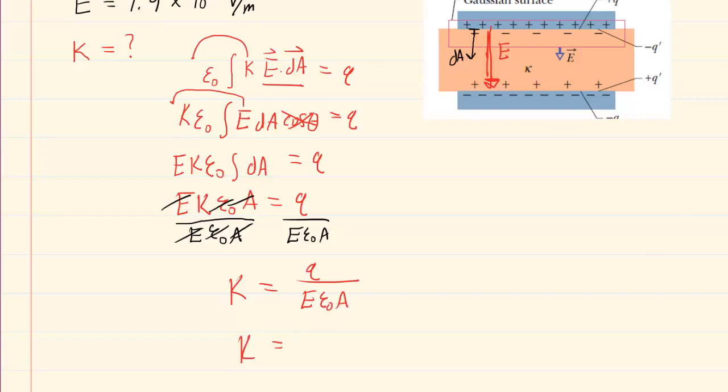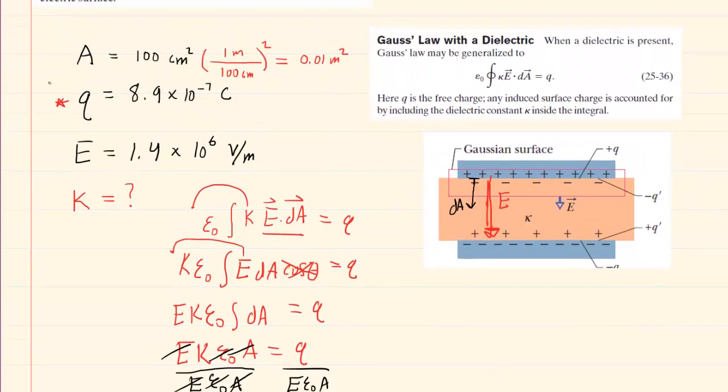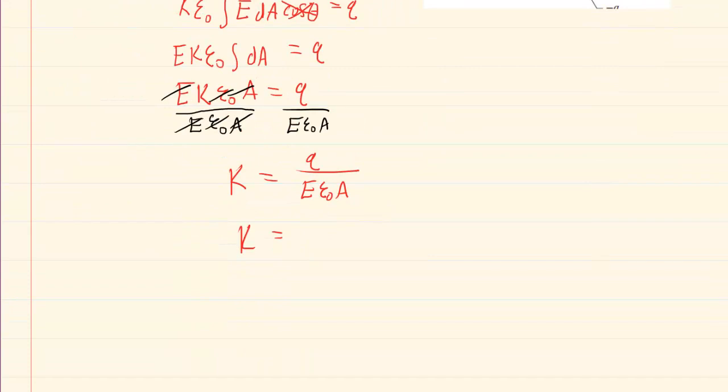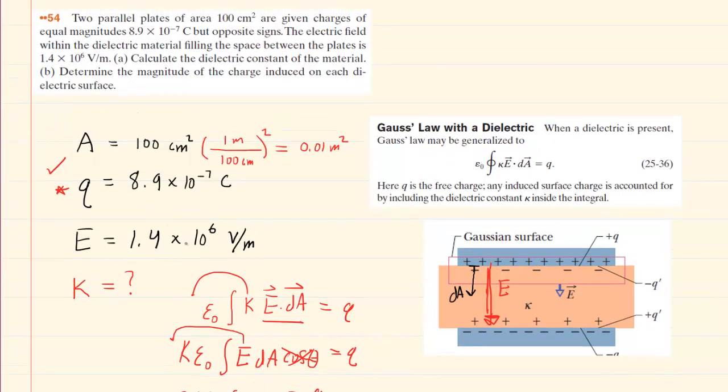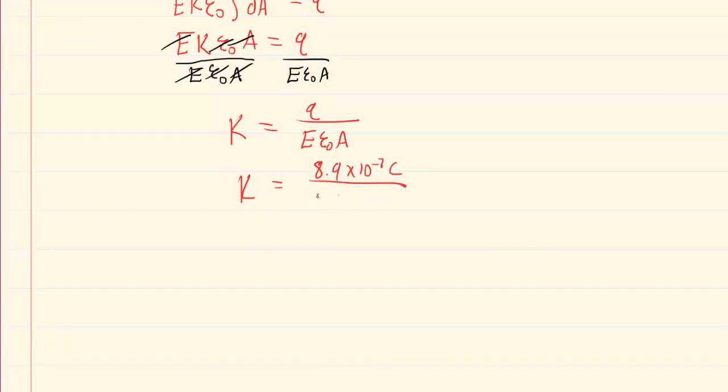And now all we have to do is plug in the known values. So the charge was given as 8.9 times 10 to the minus 7 coulombs. The electric field strength was given in the question as 1.4 times 10 to the 6th. You'll notice that was given in the standard unit of volts per meter, so you do not have to convert that. Next is epsilon naught, that's a constant. It's 8.85 times 10 to the minus 12 farads per meter, and then again times the area which we converted earlier into 0.01 meters squared.